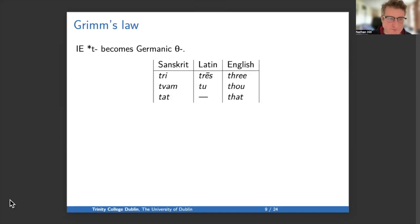Next, an Indo-European T becomes a Germanic Th, written with theta in the IPA. So we have tri in Sanskrit, tres in Latin, and three in English. Tvam in Sanskrit, tu in Latin, thou in English. Ut in Sanskrit, that in English. So again, pretty good evidence that Indo-European T becomes Germanic Th.